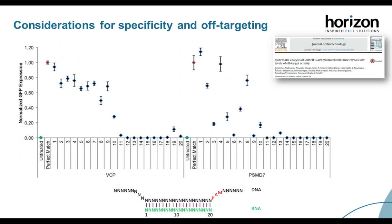The next consideration we evaluated was guide RNA specificity. It won't do any good to have a highly functional guide RNA if it cuts multiple regions of the genome. We need to ensure that the guide RNA doesn't have perfect matches to anything but the target gene. We performed and published a systematic study looking at the tolerance of mismatches when introduced at every position along the CRISPR RNA.